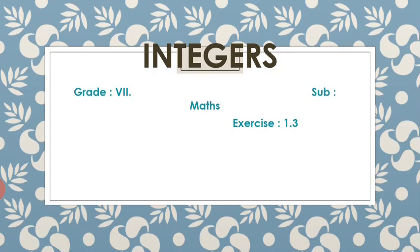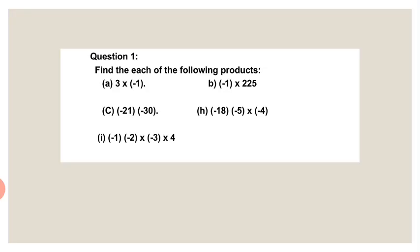Now I am going to explain Exercise 1.3. The first sum they have been given: find each of the following products. Products means that you need to multiply. Multiply means you need to multiply any number representing positive or negative integers.